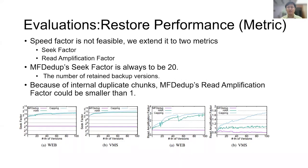Next, we study restore performance. Previous work evaluates restore performance with the proxy metric, seek factor. Because seek factor is not feasible for variable size containers, we extend it into two metrics, seek factor and read amplification factor. Seek factor reflects the cost of random seeks, and read amplification factor demonstrates the cost of sequential reads. MFDedup achieves a significantly smaller seek factor and read amplification factor.